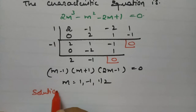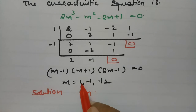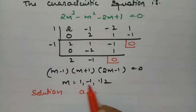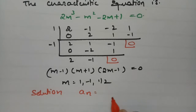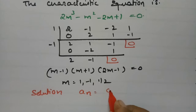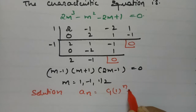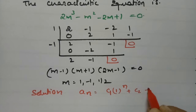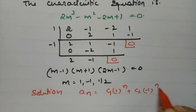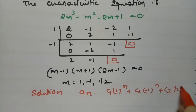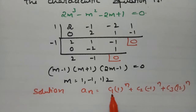Since these are distinct real roots, the general solution can be written as a(n) = c₁(1)ⁿ + c₂(-1)ⁿ + c₃(1/2)ⁿ. Now we have to find the values of c₁, c₂, and c₃ using the initial conditions.